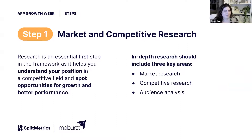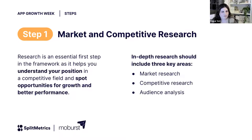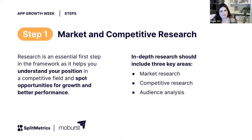Every time we want to start a CRO process or optimize our creatives, we start with research, which is done in three parts. The first is market research — we identify the main category of the app, what are the top apps in that category, and which platform is most popular in certain regions. We want to identify the region to focus on, see the most downloaded apps, how many downloads it takes to reach the top, and whether English is enough or you need to localize.